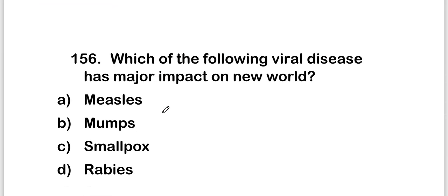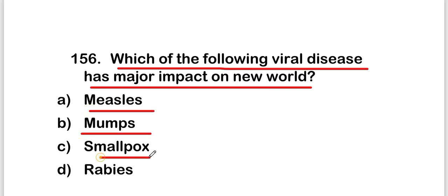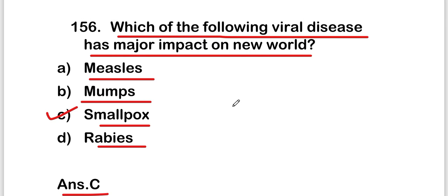The next question is: which of the following viral diseases had a major impact on the New World? The options are measles, mumps, smallpox, or rabies. The right answer is option C, that is smallpox. Smallpox is the viral disease which had a major impact on the New World.